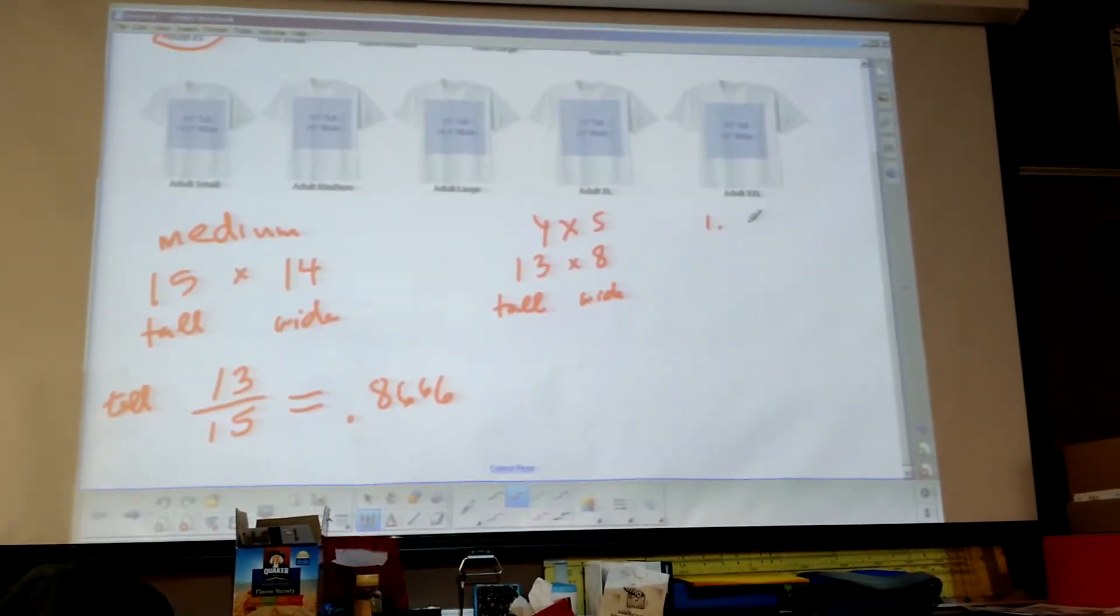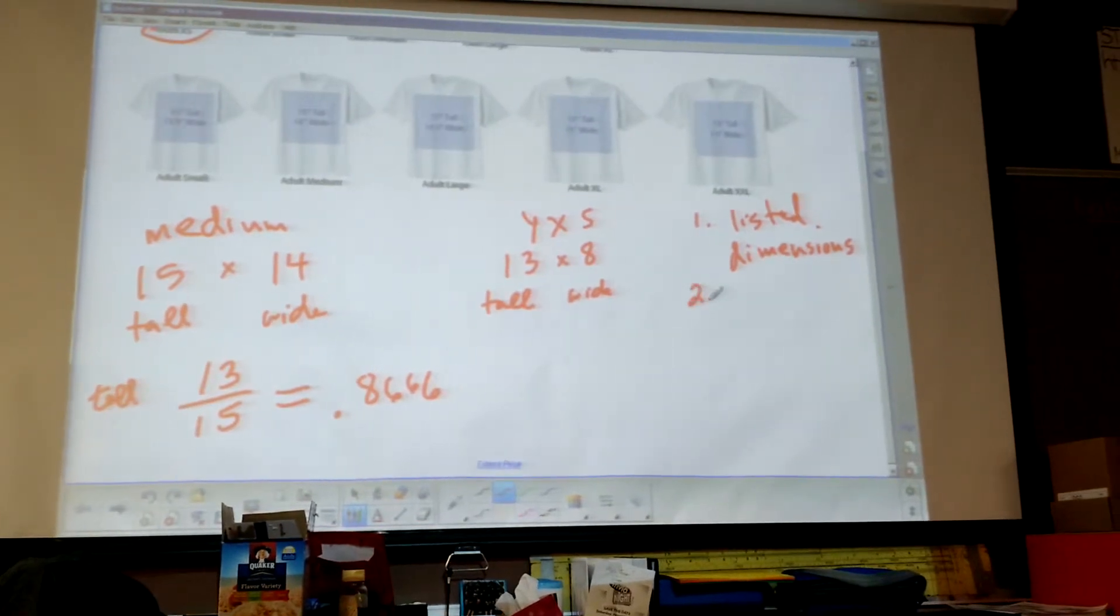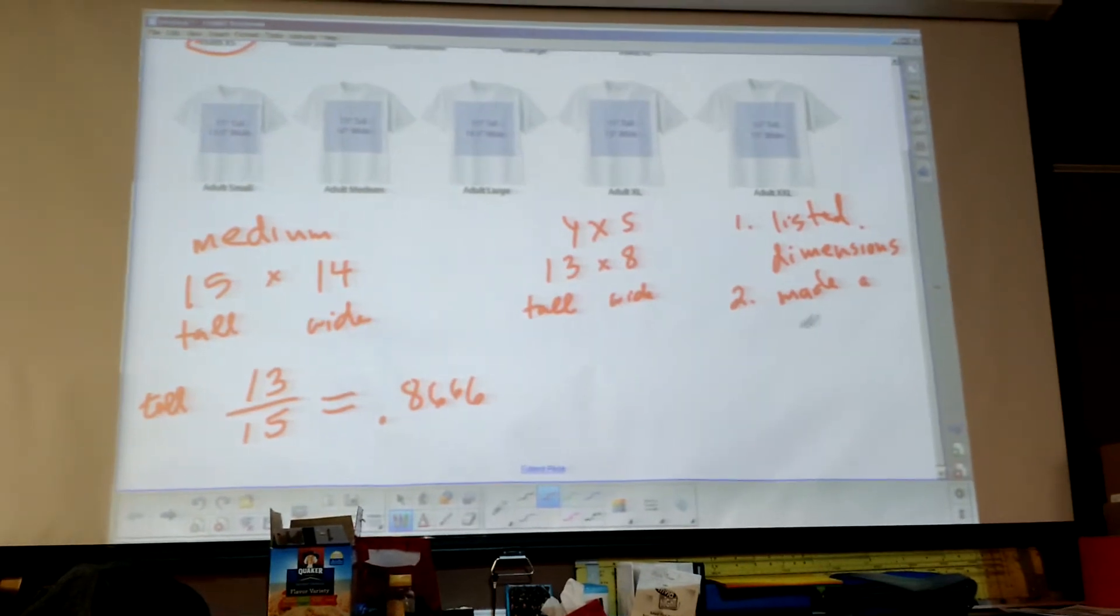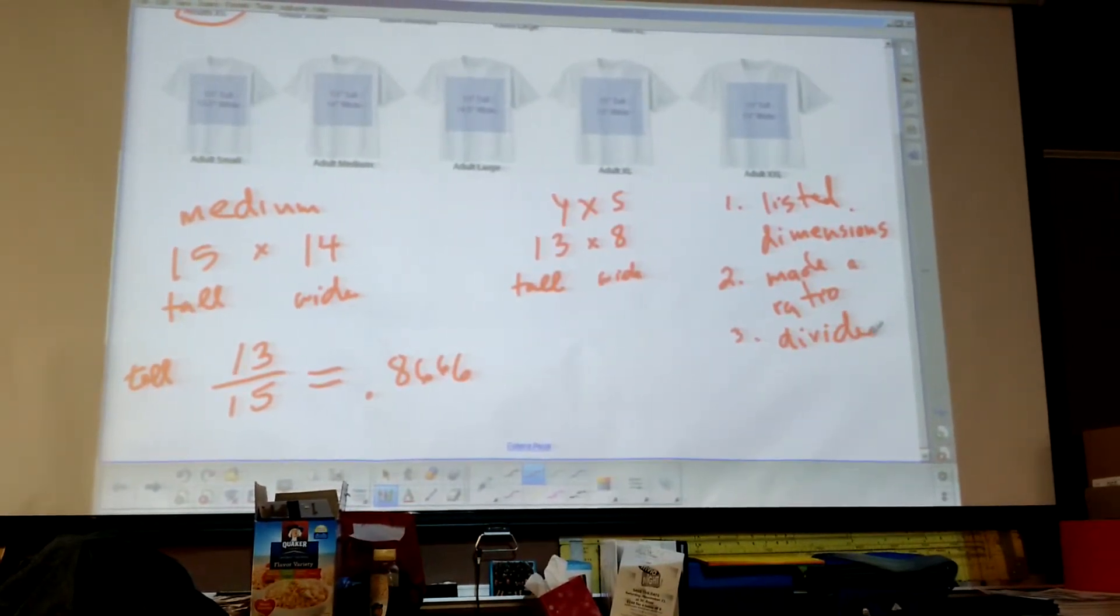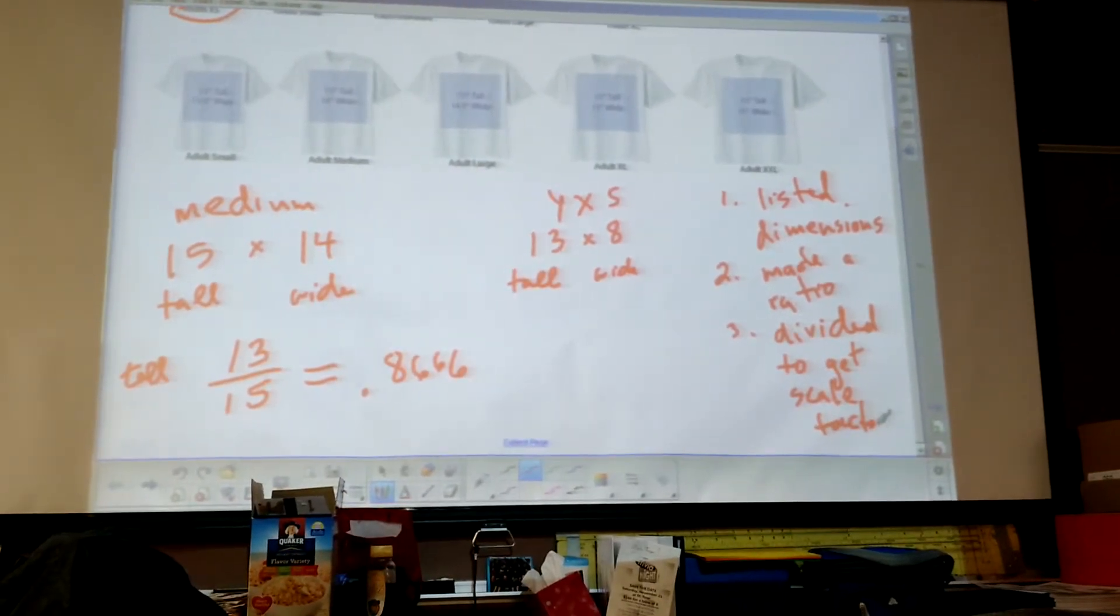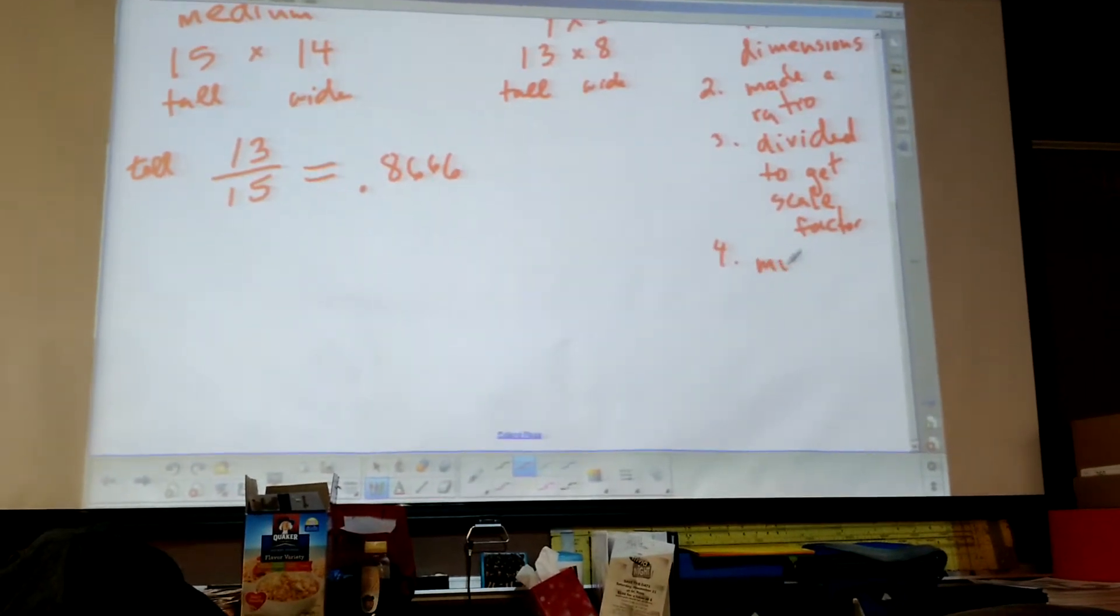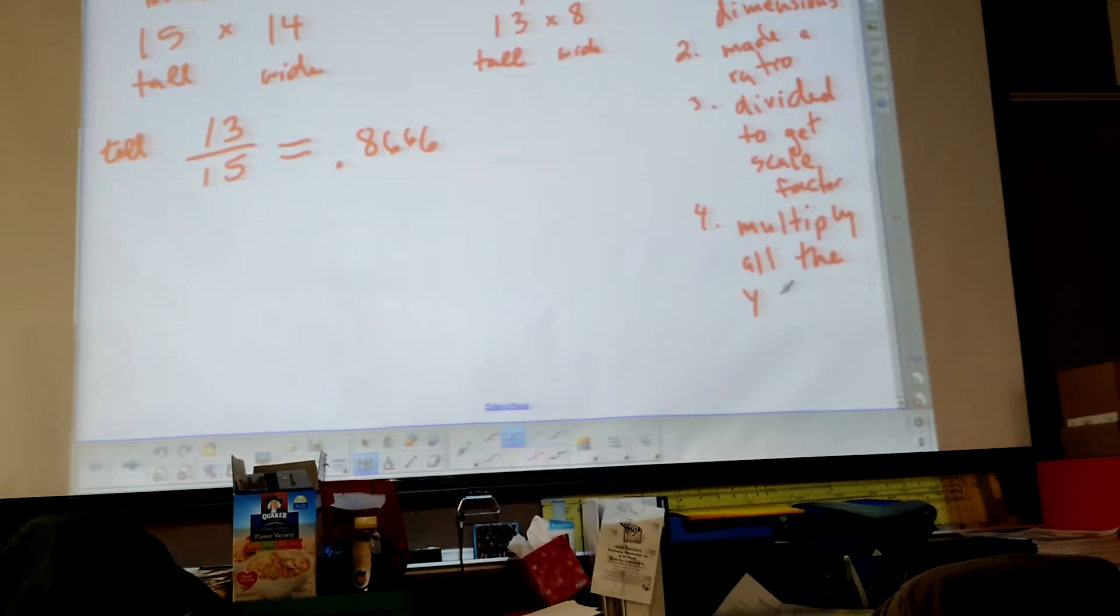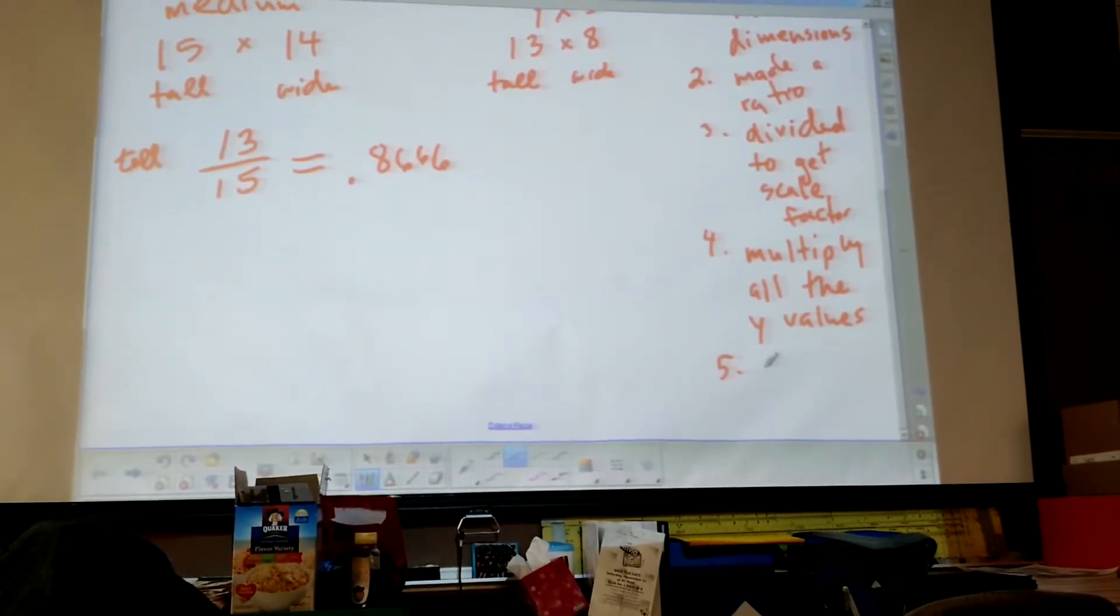Step one is we listed the dimensions, that's in your spreadsheet. Step two is we made a ratio. The numbers for your ratio come out of that picture you have in the classroom. We divided the ratio to get the scale factor. And we're going to, because we're doing tall, multiply all the y values. If you're doing width, you would do the x's.